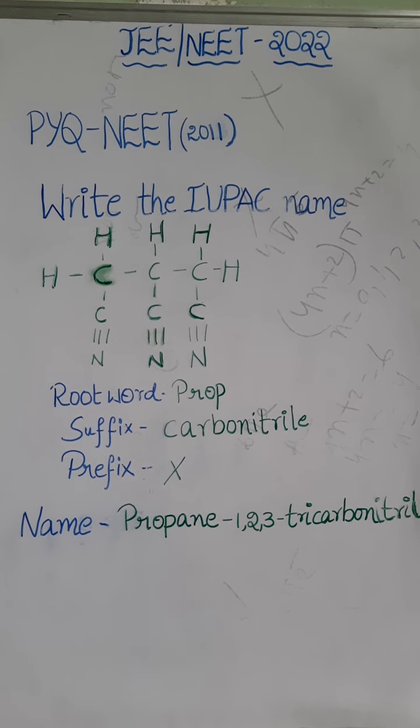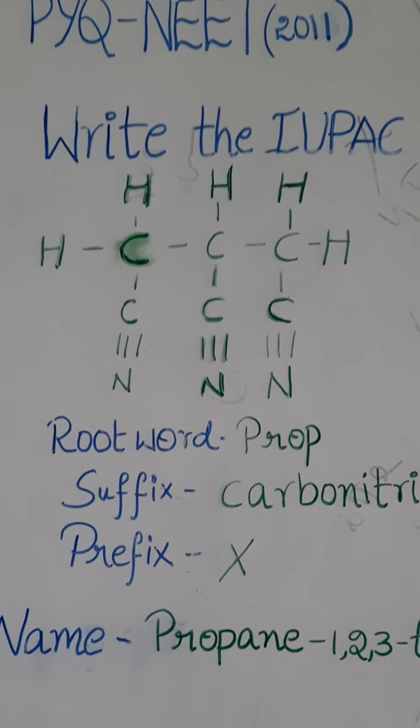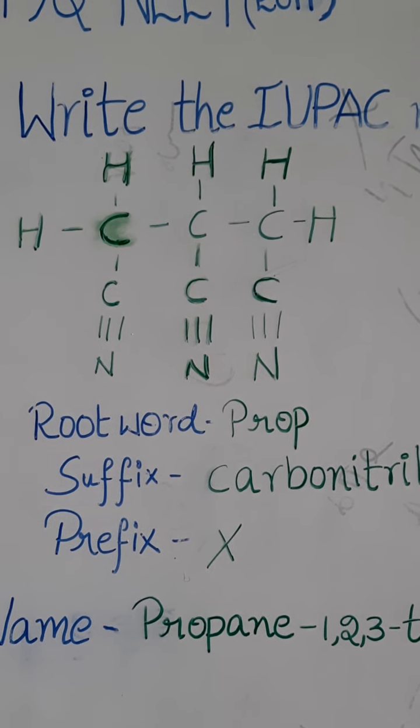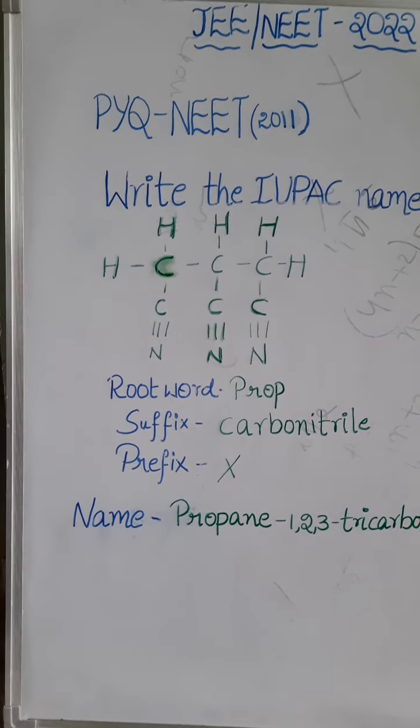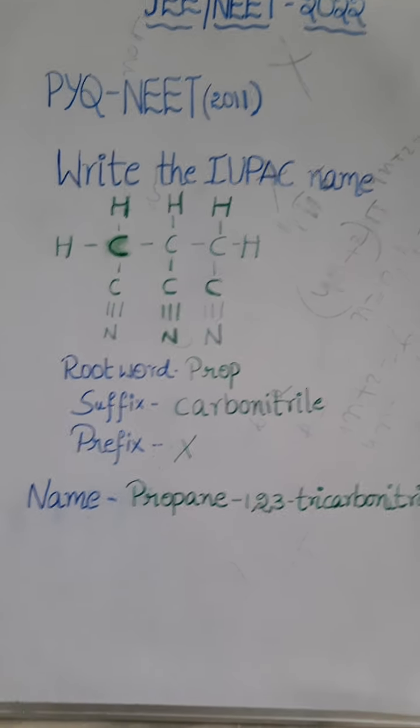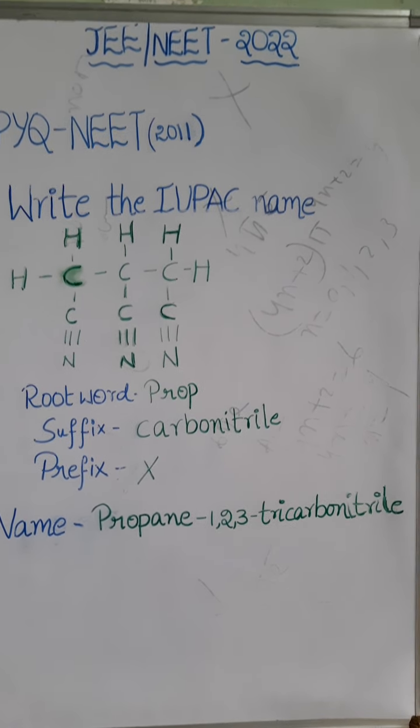Write the IUPAC name of the following compound. You can see the given compound here. Here we have three carbon atoms in the main chain, so obviously the root word is prop. Suffix is carbonitrile, that is cyanide group. Hence the name comes like propane-1,2,3-tricarbonitrile.